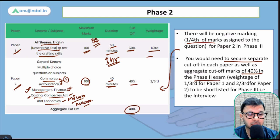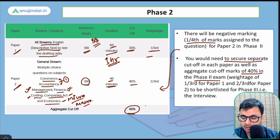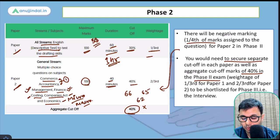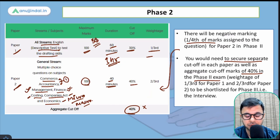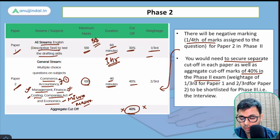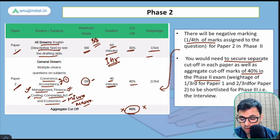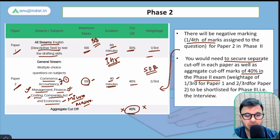The combined cutoff of 40 percent in Phase 2 effectively becomes irrelevant because the actual cutoff goes very high — around 62 to 66 percent. So practically speaking, if you have less than 60 percent you'll be disqualified anyway. The 40 percent threshold is a safety net in case a student scores extremely low. In 2020/2021, 50 questions of 2 marks each were asked in Phase 2 Paper 2.